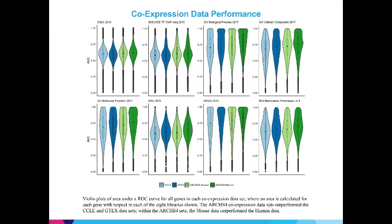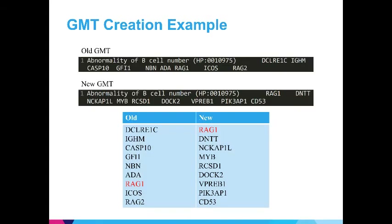ARCHES4 co-expression data outperforms both CCLE and GTEx datasets in this comparison of 8 libraries with 4 datasets. Within the ARCHES4 co-expression datasets, the mouse data outperforms the human data. The libraries of GO biological process and KEGG are performing exceptionally well, with the ARCHES4 mouse data having a median area under the curve very close to 1.0. This is an example of a new GMT that I created. Genes such as DNTT or MYB now are newly associated with the function of abnormality of B cell number — a newly predicted function for those genes.